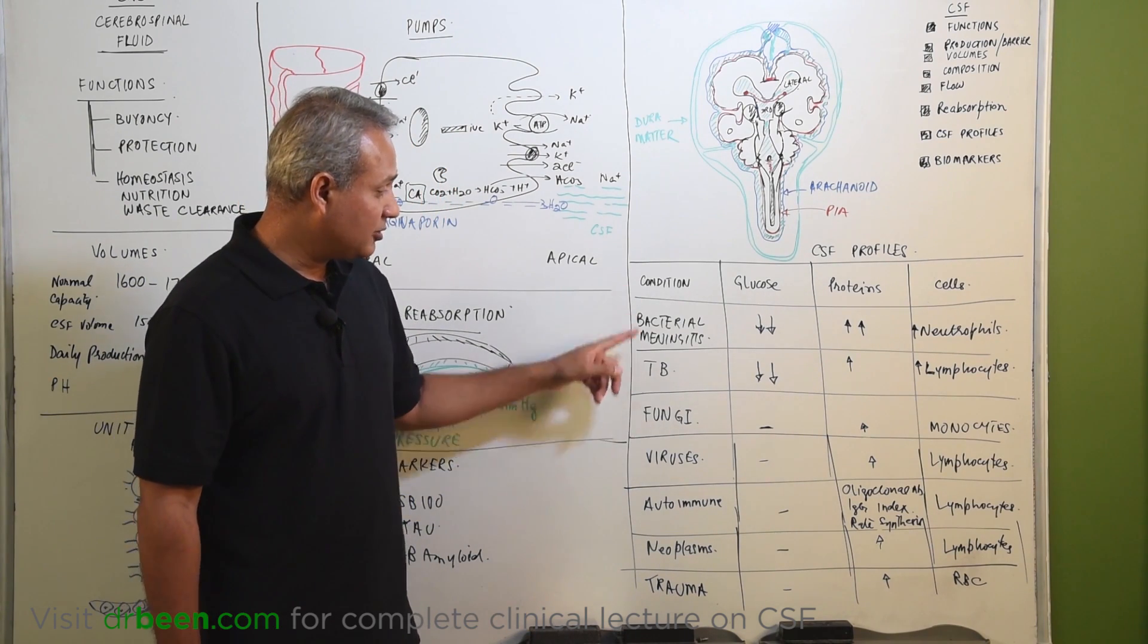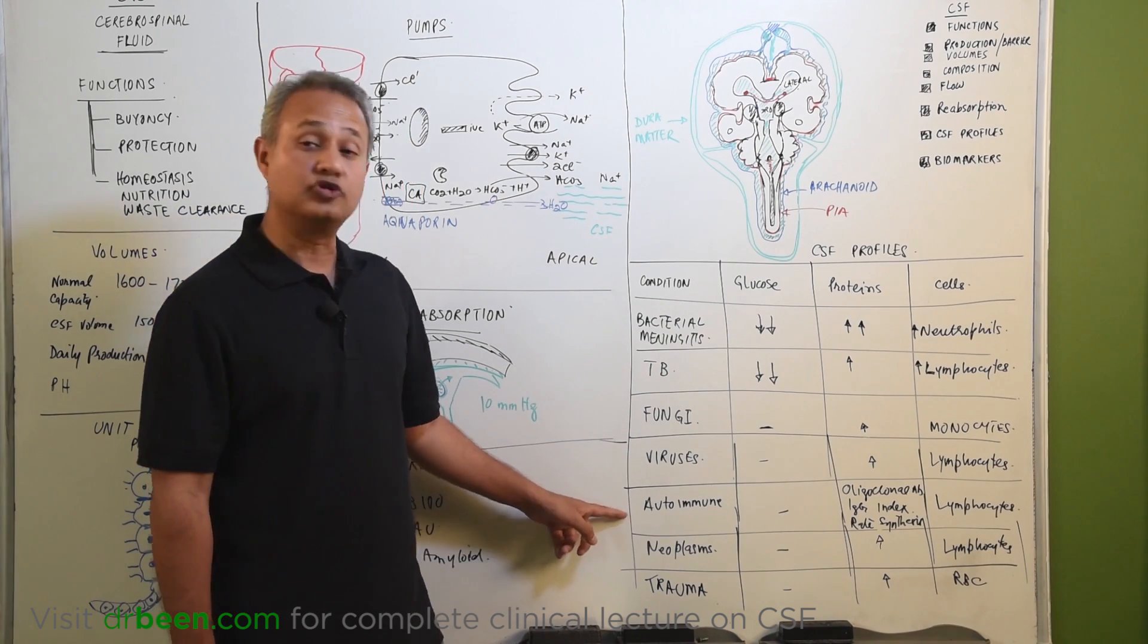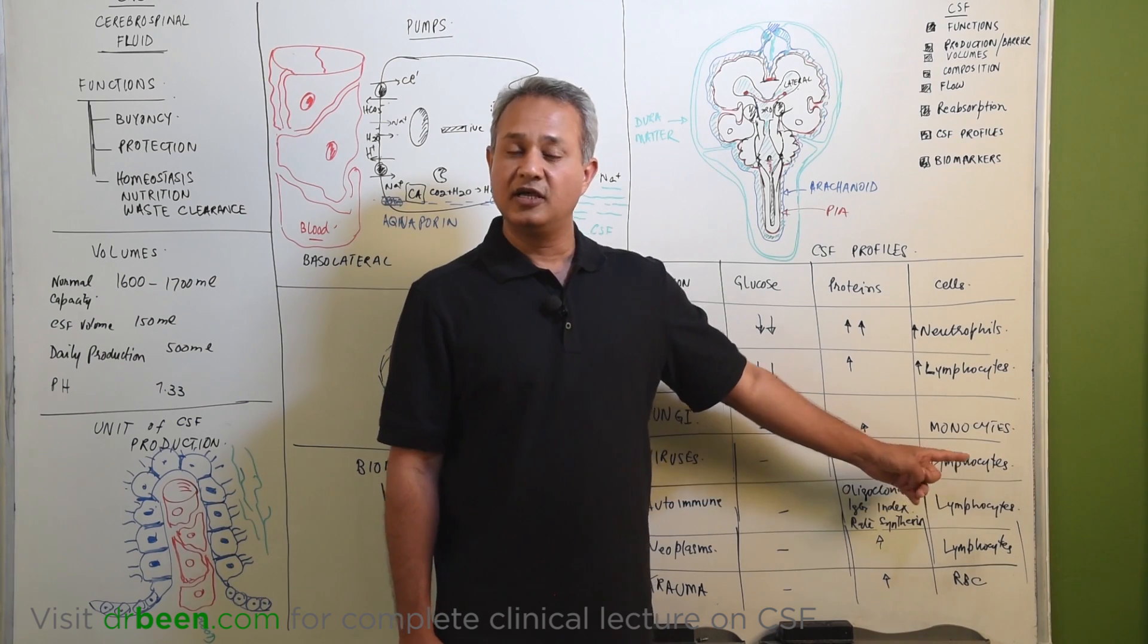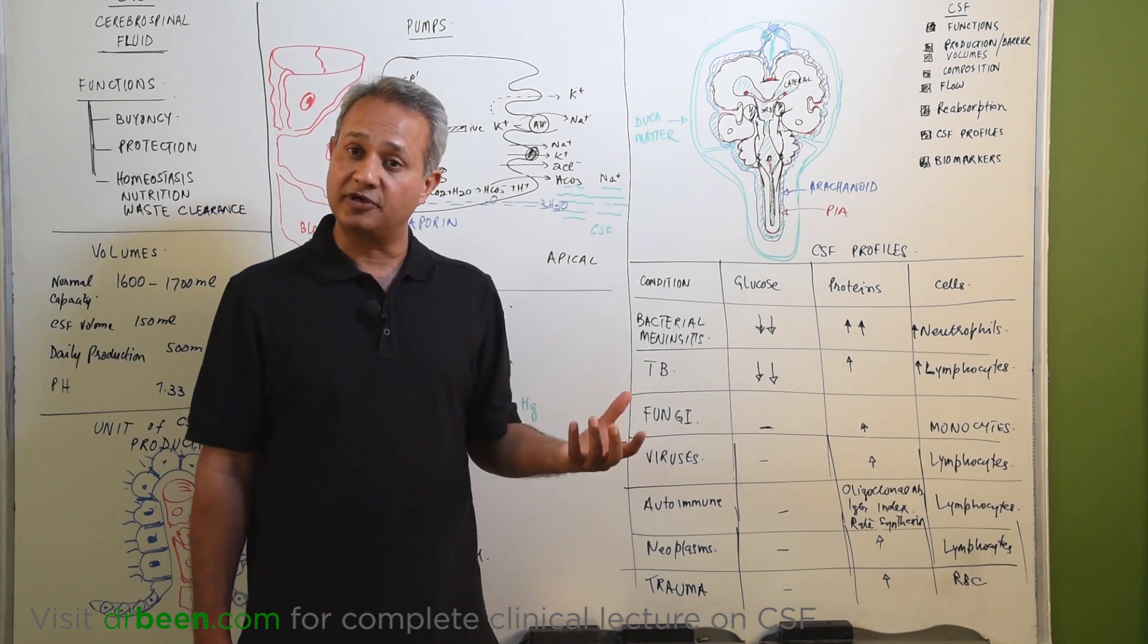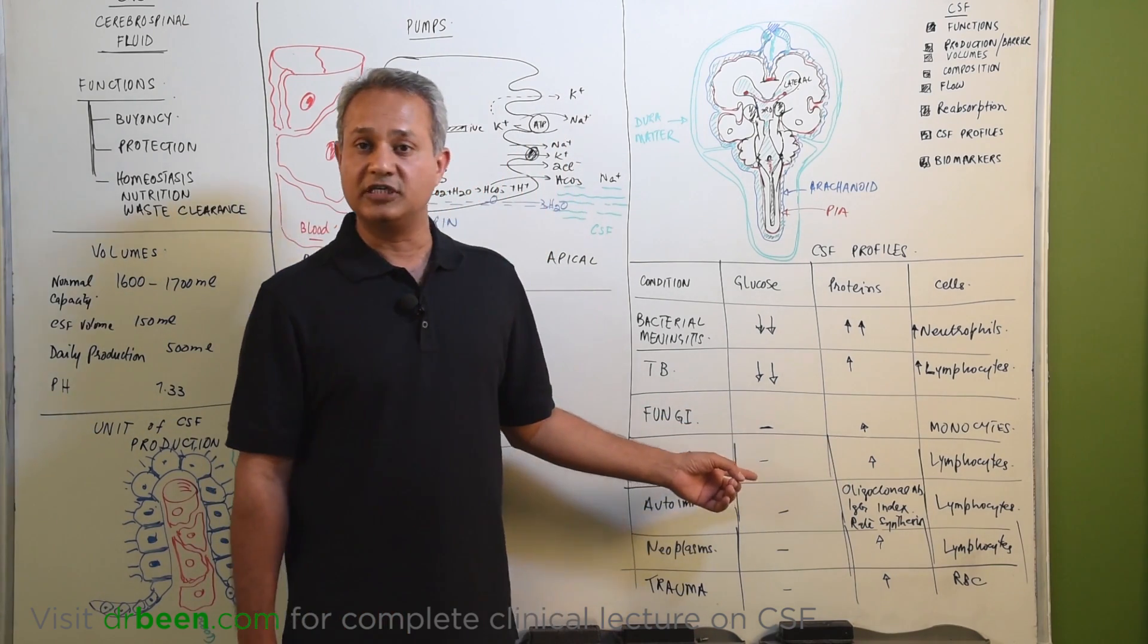They might confuse you with bacterial virus and autoimmune. So, look in viral case, the cells that are going to be present are lymphocytes, not much change to the protein. Still, there is going to be inflammation or antibody production. Proteins can be increased, but not too much and nothing, no change for the glucose.